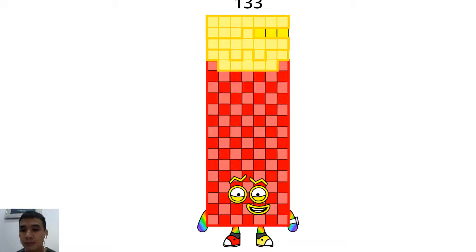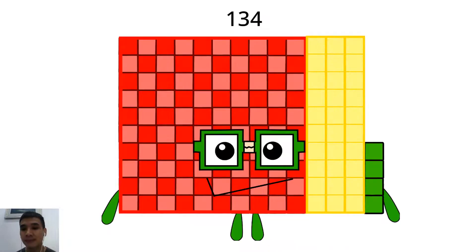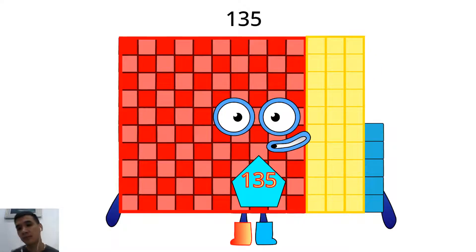Hello, 133. I'm a lucky crazy shape. Hello, 134. I'm a robot double 67. Hi, 135. I'm a 27 times 5 shape.